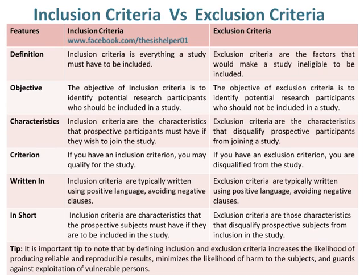Inclusion criteria are the characteristics that prospective participants must have if they wish to join the study, whereas exclusion criteria are the characteristics that disqualify prospective participants from joining a study. If you have an inclusion criterion, you may qualify for the study. Whereas, if you have an exclusion criterion, you are disqualified from the study.